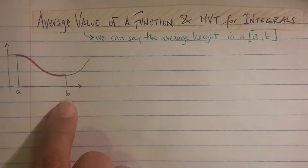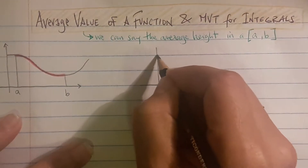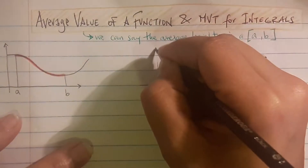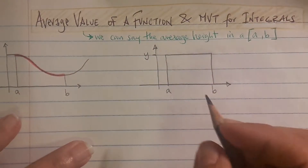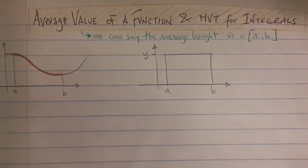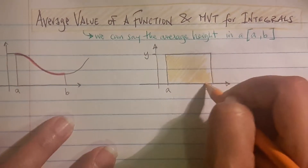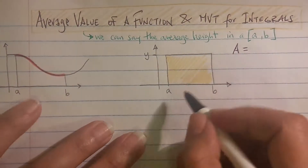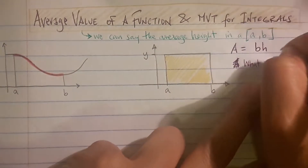To explain this, let me try something simpler first. Say we had another graph where we had a rectangle on the closed interval [a, b]. If I told you to find the average height of that, it's easy because the average height is constant. How do you go about finding the area of this rectangle — the shaded region? You know that area equals base times height.